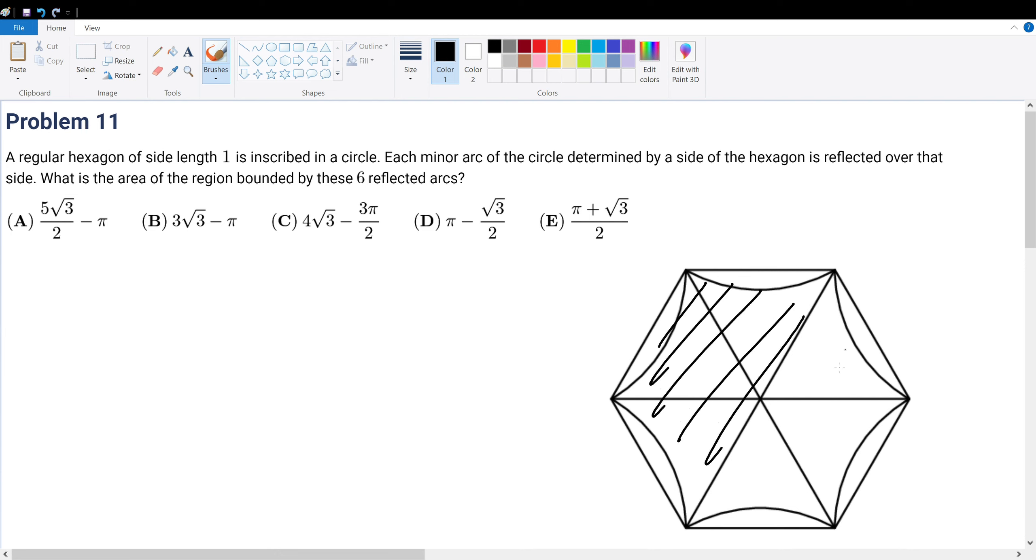It should be pretty evident that to solve for that region, it would be simply the hexagon area, the entire hexagon area, minus six times that little circle area.